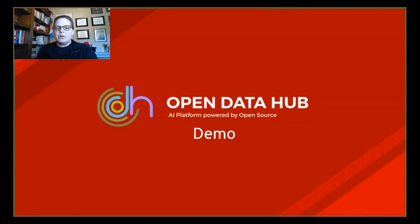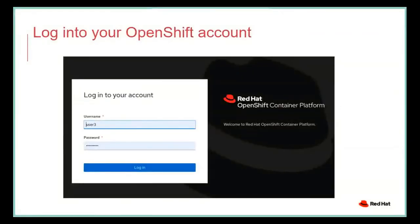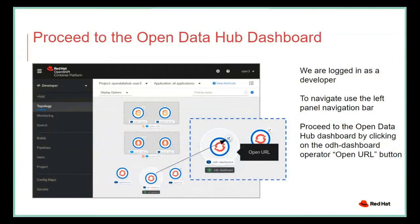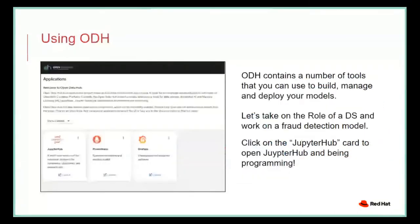I'd like to give you a slide demo showing how I would do fraud detection within a bank to give you a flavor of working with OpenShift and Open Data Hub to deliver a solution. First, we log into our OpenShift account, then proceed to the Open Data Hub dashboard. We're logged in as a developer and use the left panel navigation bar. We click on the ODH dashboard operator and then click the OpenURL button.